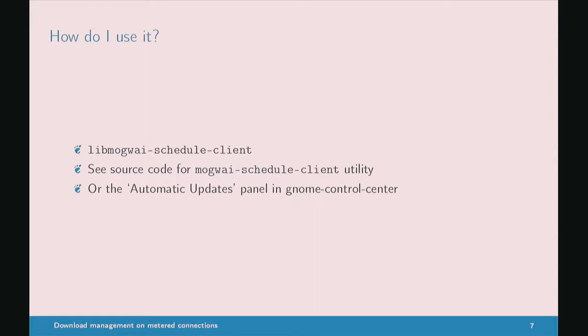The PDF of these slides will contain links to that code afterwards. Essentially, your application needs to create a schedule entry for every download you care about doing, set the metadata of the download like the size and domain, and then tie the state of your download to signals from the scheduler — telling it when to start, when to pause, when to resume. Then you need to update the scheduler saying you've finished, or that you want to cancel the download.